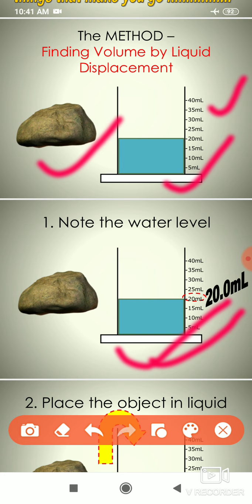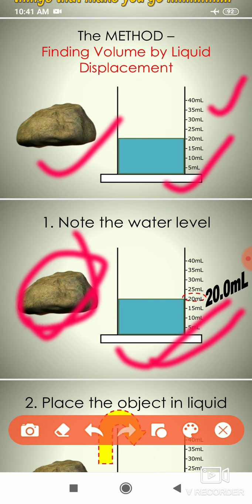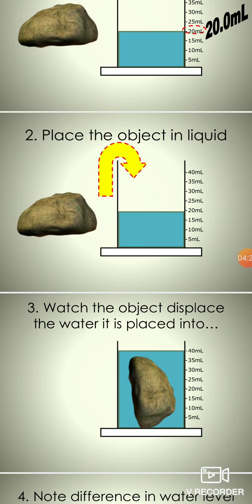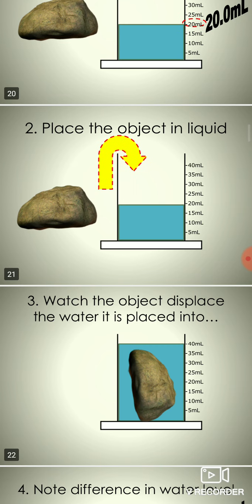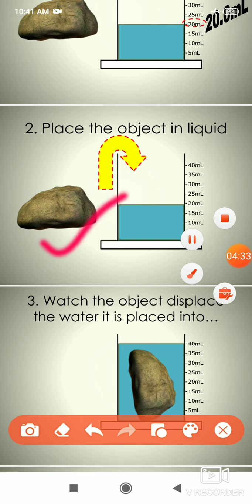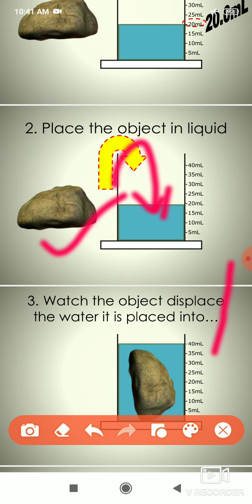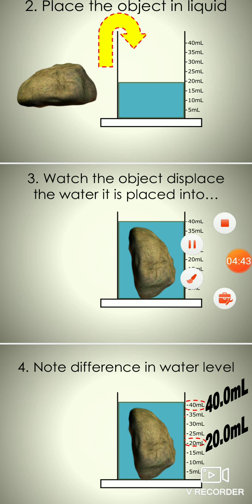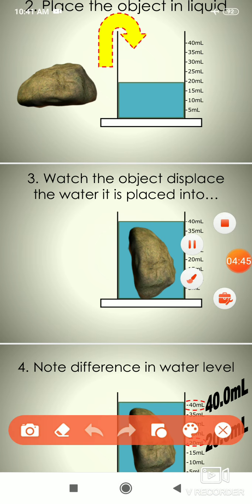We want to calculate the volume of the irregular shape. We place the irregular shape object into the beaker. The level of the water rises — initially the level was 20 ml, and now the level of the water is 40 ml.